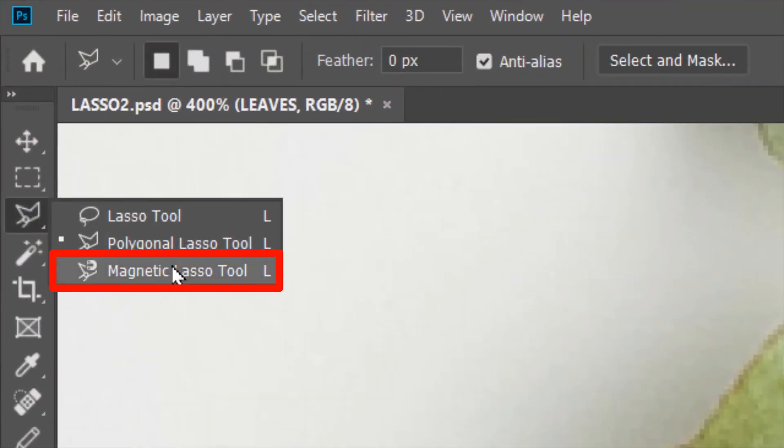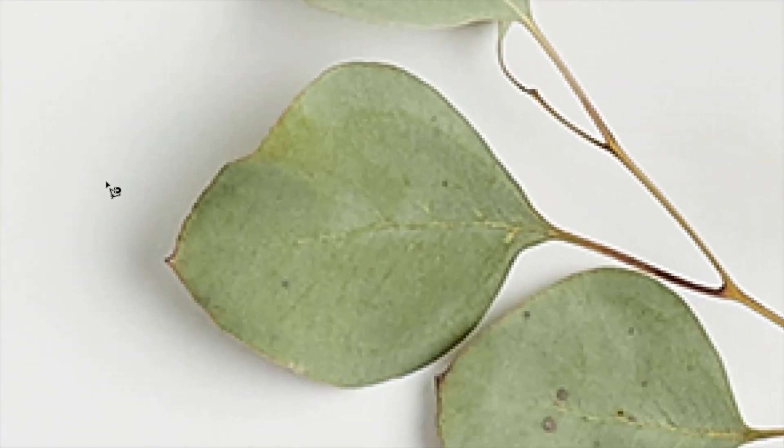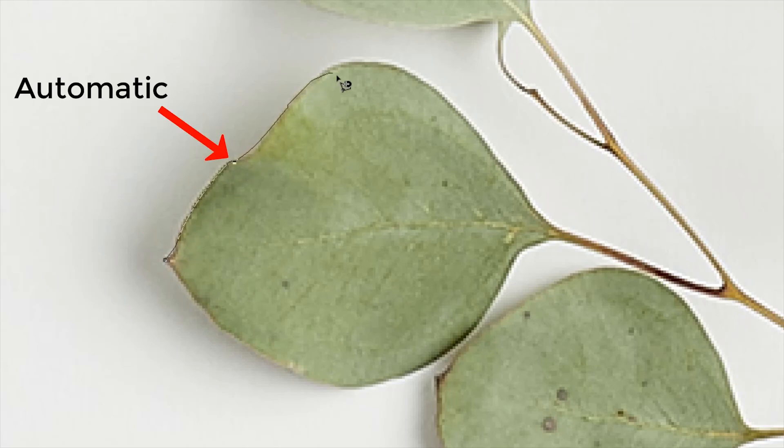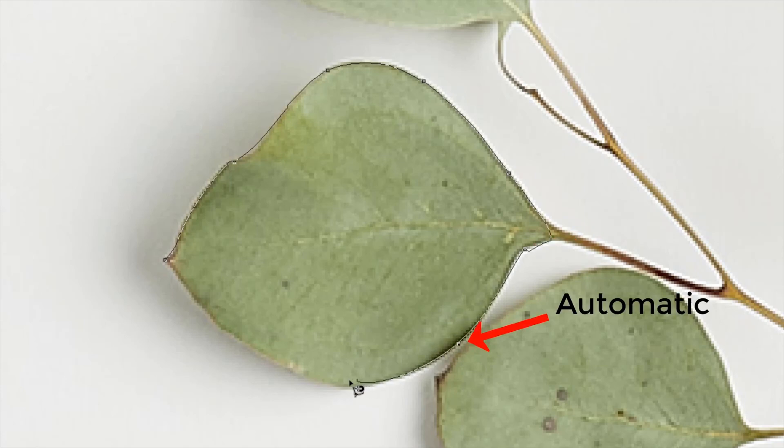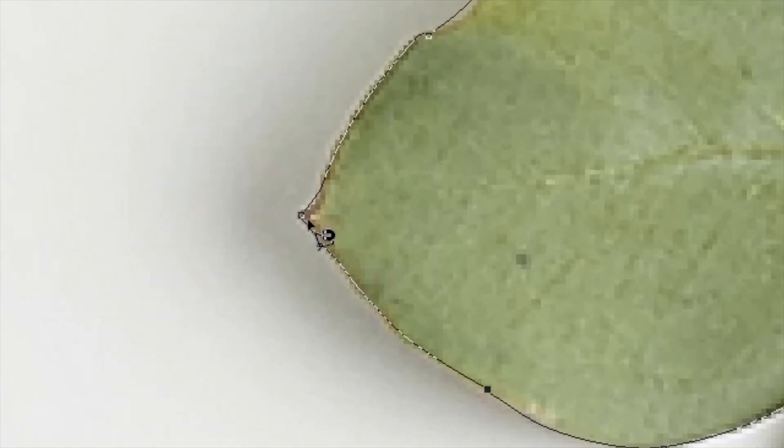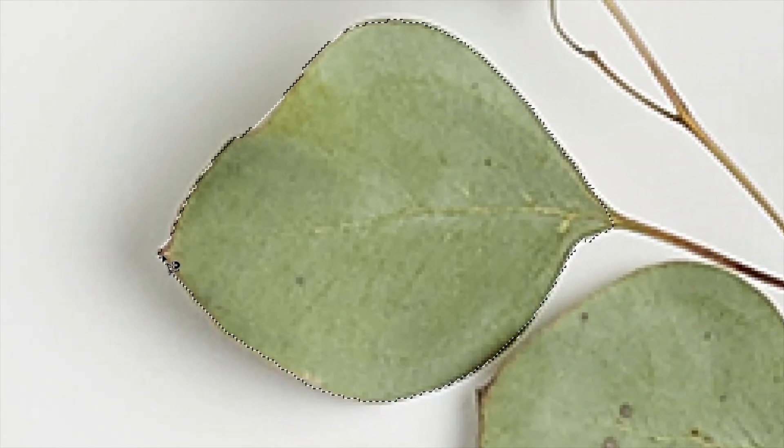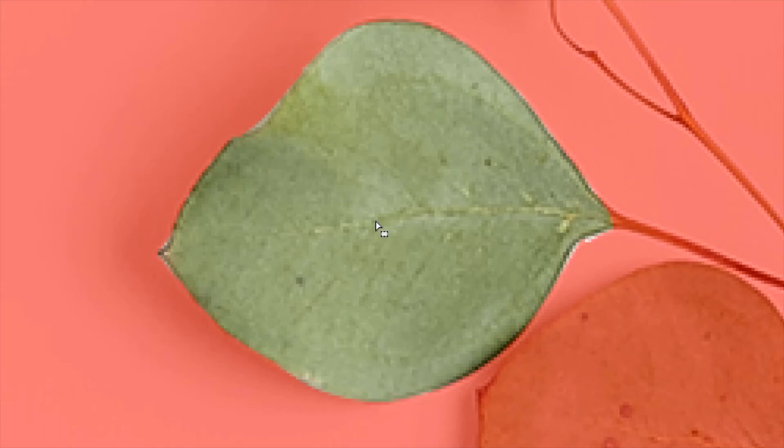The magnetic lasso tool detects the edge of an object and draws a selection along the edge. So you can see when I hovered the tool along the edge of the leaf, it attracts the tool and makes the selection. Here when you come to the start of the selection, you see this circle, which is when you click and close the selection. It's made a pretty neat selection of the leaf. You can press Q and preview the selection. Press Q again to get out of the preview mode.